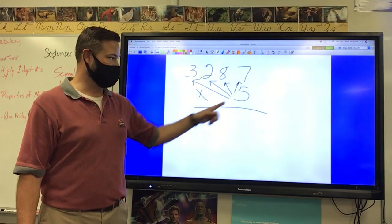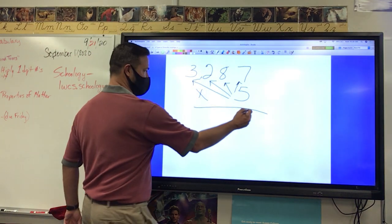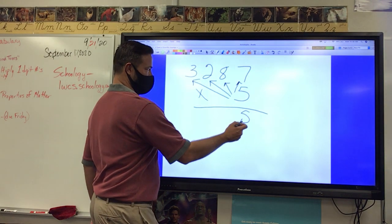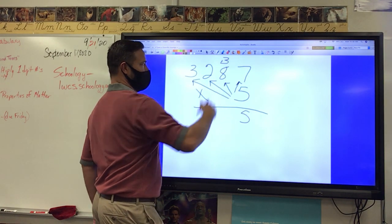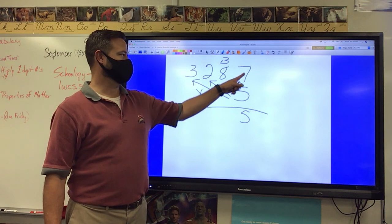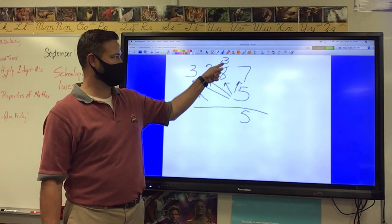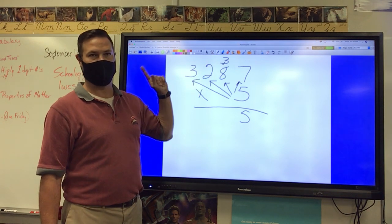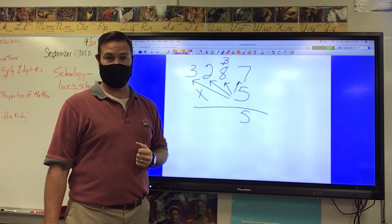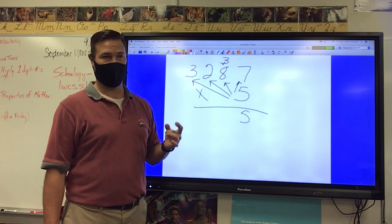What is five times seven? 35. What number goes down? Five. What number goes up? Three. Where does that three go? Above the eight. Now what do I do? I did five times seven. Now I do five times eight, which is? Forty. What do I do with that? Add three, right? Forty plus three is? Forty-three.